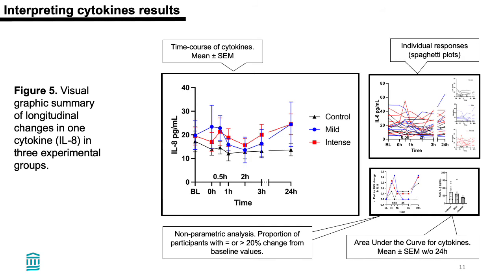In Figure 5, our group prepared a visual graphic summary of longitudinal changes for interleukin-8 as an example, representing different analysis modalities — including time curves of cytokine expression showing mean and standard error of the mean per group, individual longitudinal responses using spaghetti plots for each group, individual longitudinal changes per group and cytokine, and a non-parametric approach to determine the proportion of participants with an equal or greater than 20% change from baseline values.